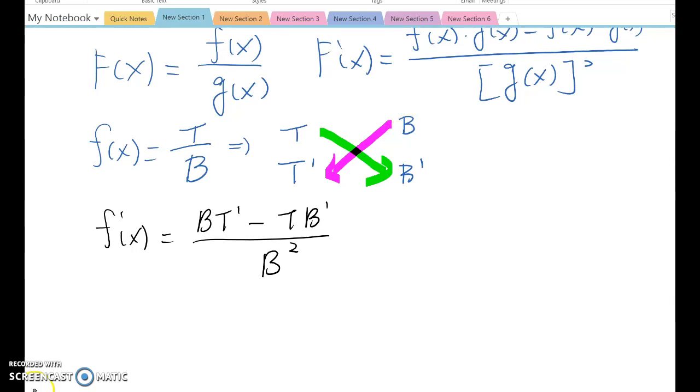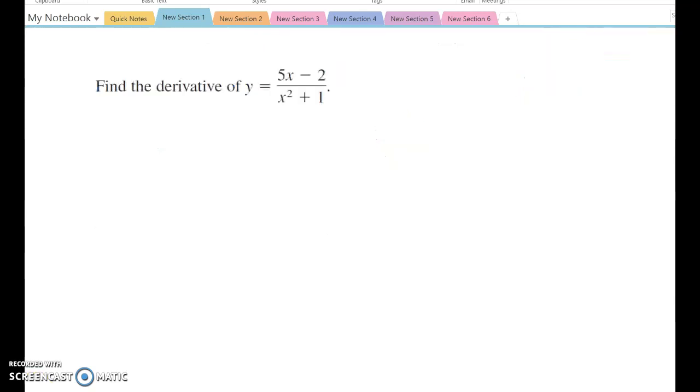Let's look at an example. Find the derivative of y equals 5x minus 2, over x squared plus 1. So I'm going to set up T equals 5x minus 2, B equals x squared plus 1, and T prime is 5, B prime is 2x. So always this direction first, and secondly this direction.